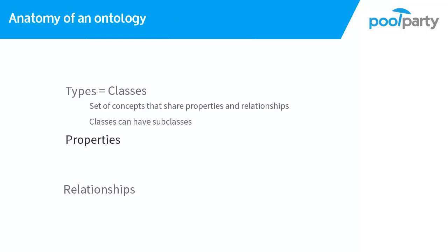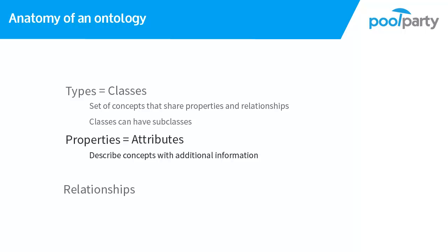Let's go to the next thing we define in an ontology: properties. Properties are called attributes in PoolParty. Every class can have attributes, meaning that once you have defined a class, you can say that all concepts in that class are allowed to have a certain attribute. Attributes are a way to associate all kinds of information with concepts in your taxonomy. In PoolParty, attributes are fields where you can input information freely.